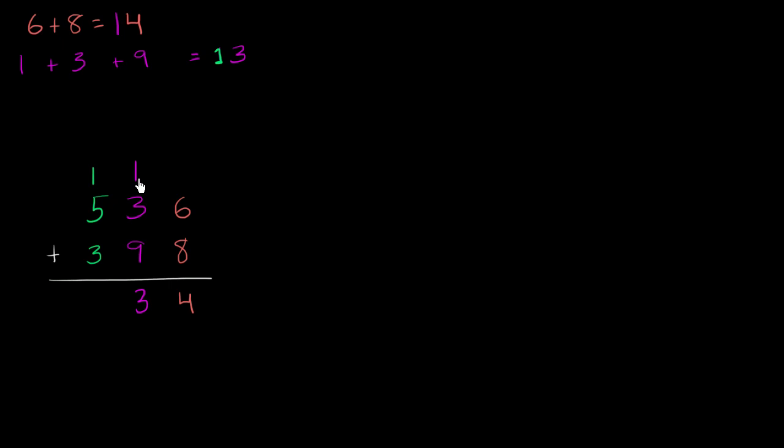When we're adding 1 ten plus 3 tens plus 9 tens, we're actually adding 10 plus 30 plus 90. And we're getting 130. And so we're putting the 30, the 3 in the tens place represents the 30.